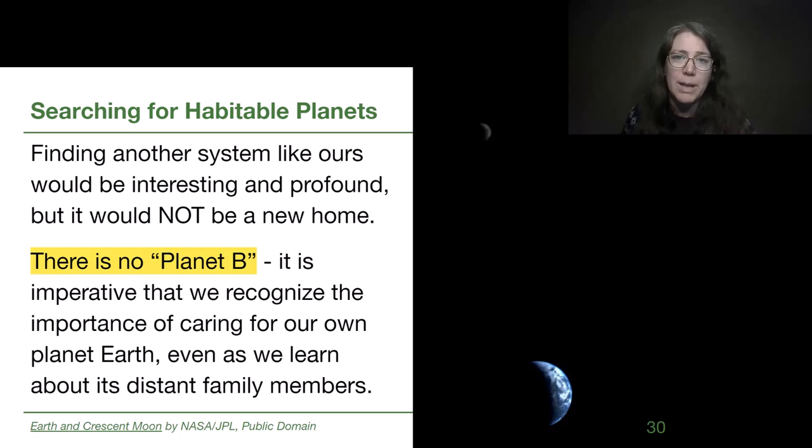There's no backup planet to change our civilization to once we find it. This image is taken of the Earth-Moon system from the Voyager spacecraft, and it reminds us of just how rare it is to have a habitable planet like the one that we do, and how important it is to take care of it.